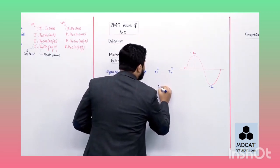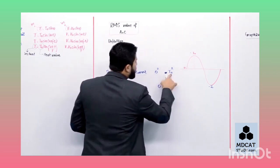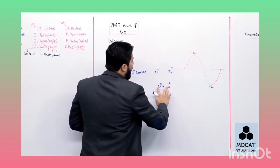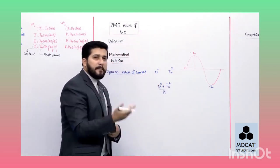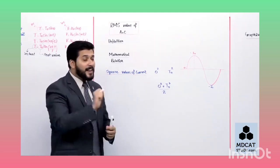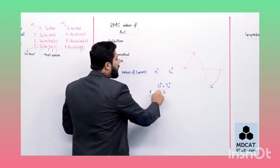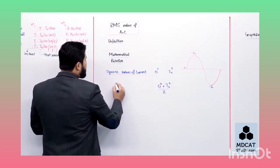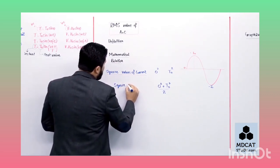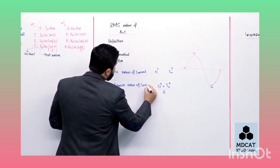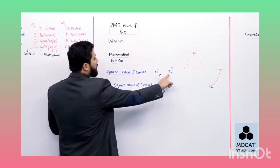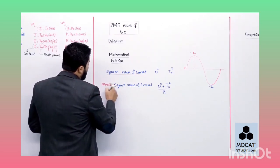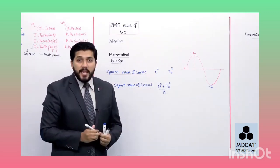Mean لینے کے لیے values add کرو اور total سے divide کرو۔ یہاں دو extreme values - zero اور i₀ - کو لے رہے ہیں: (0² + i₀²)/2 = i₀²/2۔ یہ current کی values کا mean نہیں بلکہ current کے squares کا mean ہے - یعنی یہ mean square value of current ہے۔ Square لینے کی وجہ سے value بہت زیادہ ہو گئی ہے، اس لیے square کا effect cancel کرنے کے لیے under root لے لیتے ہیں۔